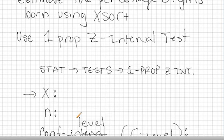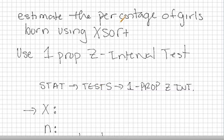X is the statistic of interest, meaning if they're asking us to estimate the percentage of girls born using XSORT, X is going to be the number of girls born.